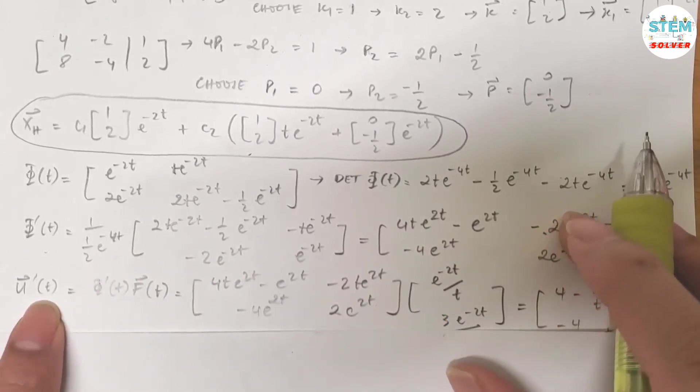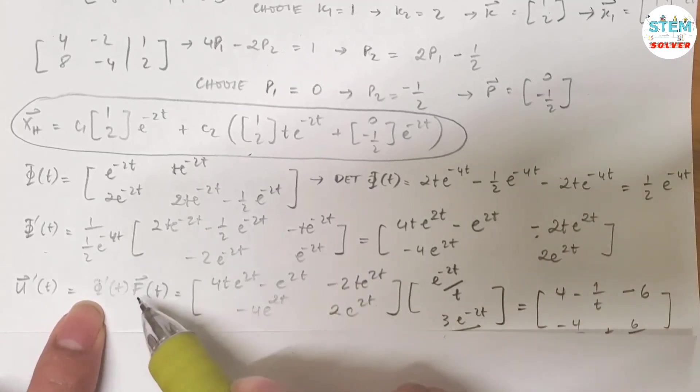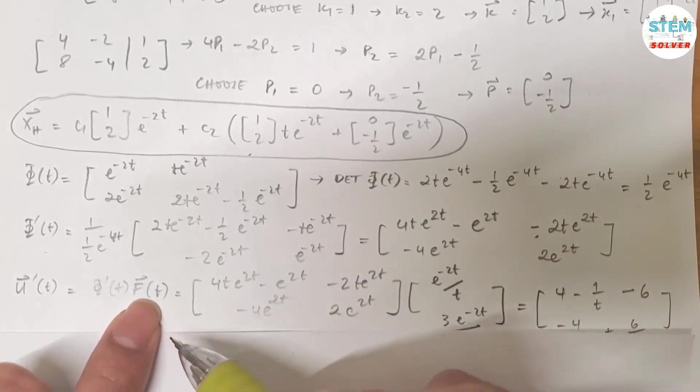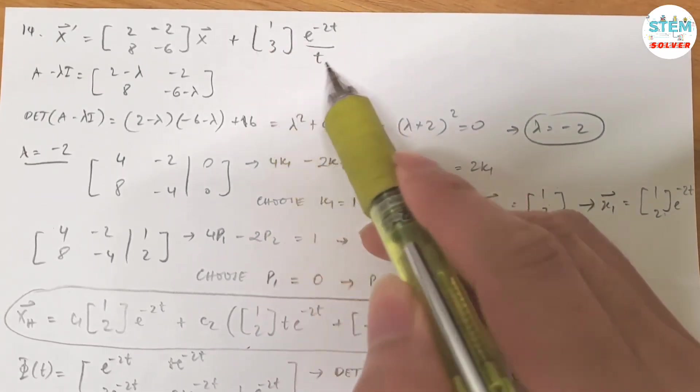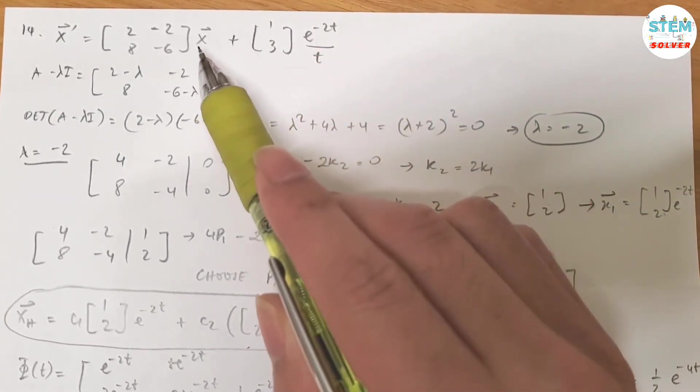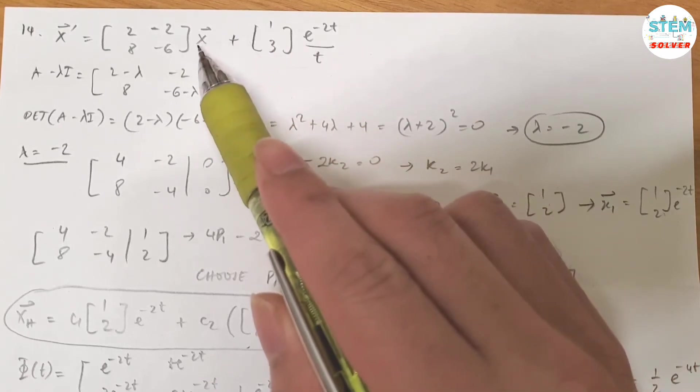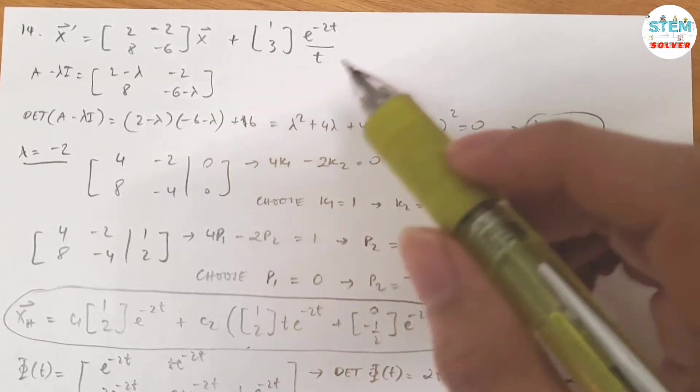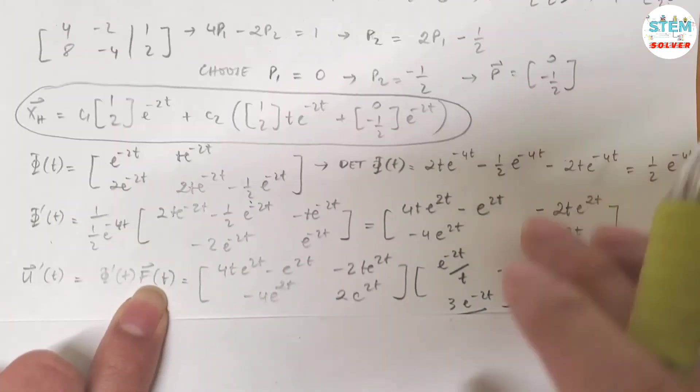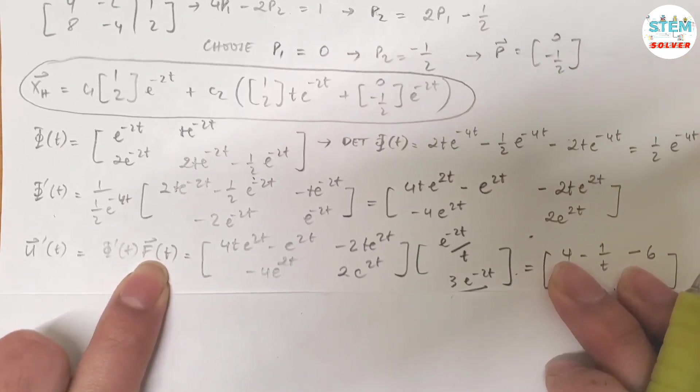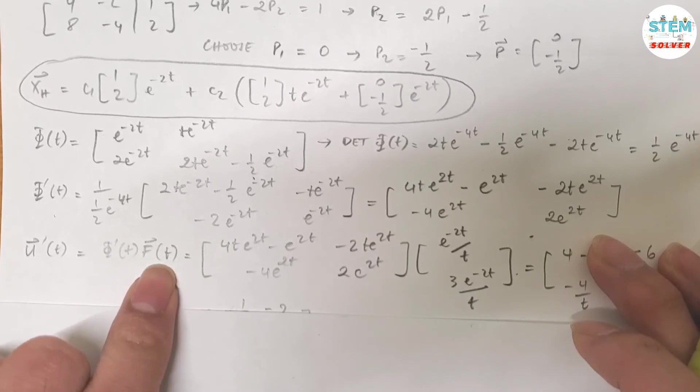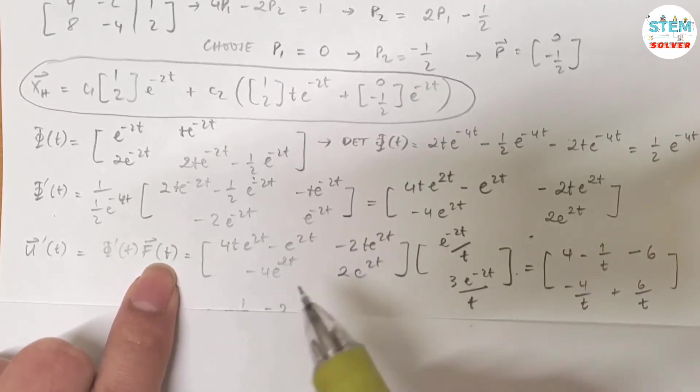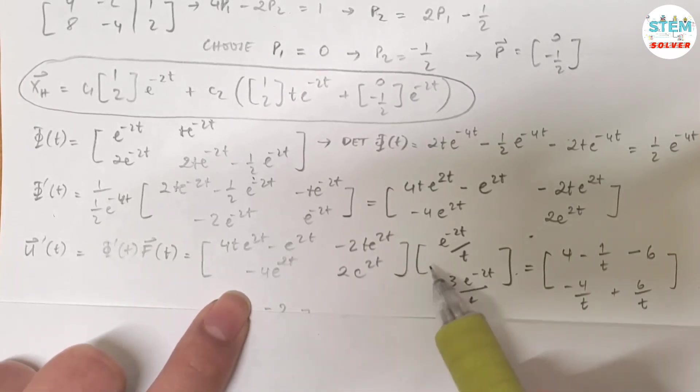Now, I need to find u prime of t, which is equal to inverse Φ(t) times f(t). What is f(t)? f(t) is this thing, the whole thing. What's left over when you... what comes after x? Back to x. Here is the thing: you multiply matrices together, right?